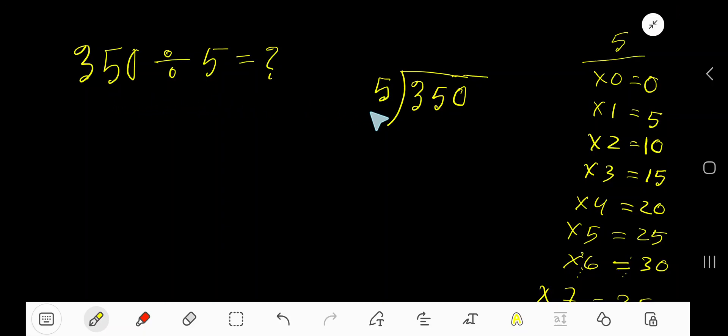350 divided by 5. Here, 5 is a divisor, so we need the multiplication table of 5. 5 times 0 is 0, 5 times 1 is 5, 5 times 2 is 10, 5 times 3 is 15, 5 times 4 is 20.